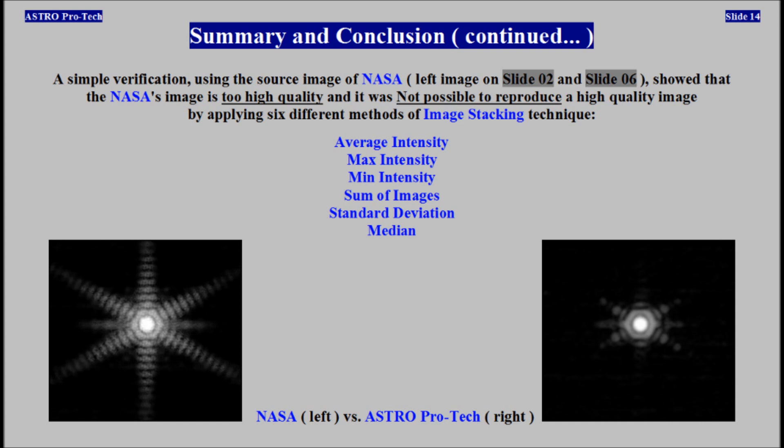A simple verification using the source image of NASA showed that the NASA image is too high quality, and it was not possible to reproduce a high quality image by applying six different methods of image stacking technique: average intensity, max intensity, minimum intensity, sum of images, standard deviation, and median.